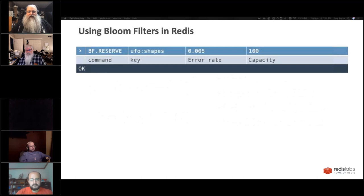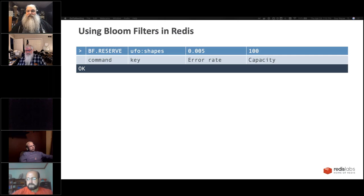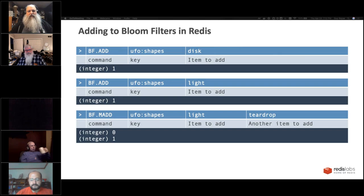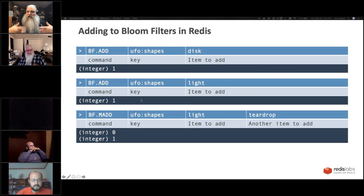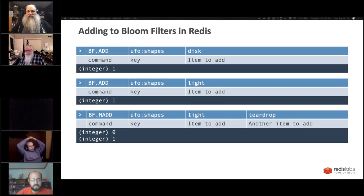It's even easier if you just use Redis. You can say BF.RESERVE, give it a key name, give it an acceptable error rate — say half a percent — and tell it you want to store 100 items. Redis will do all the math for you. Once you have a bloom filter, they are simple to use. BF.ADD adds a shape; we add 'disk', returns one; we add 'light', returns one. Using MADD, we add 'light' and 'teardrop' — it returns zero and one. The zero for 'light' means the bloom filter state wasn't changed because we had already added it earlier — this is a clue that you're about to get a false positive.